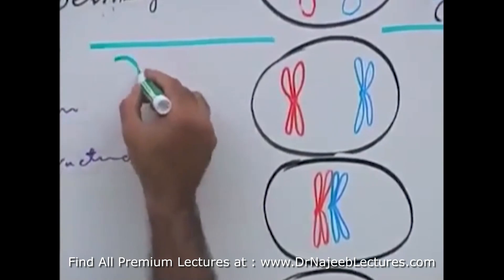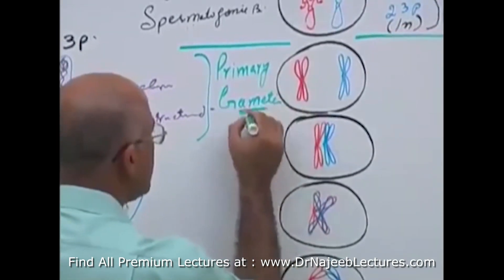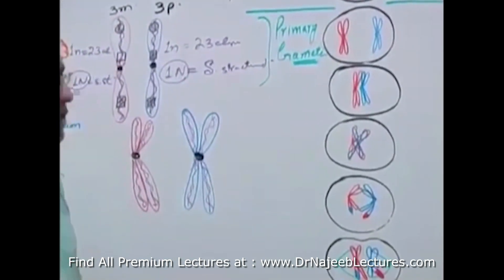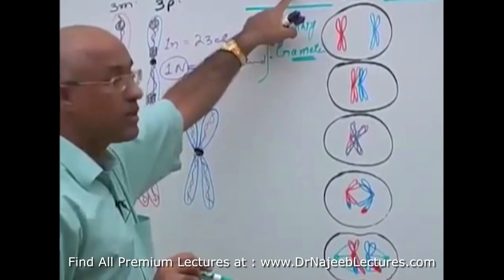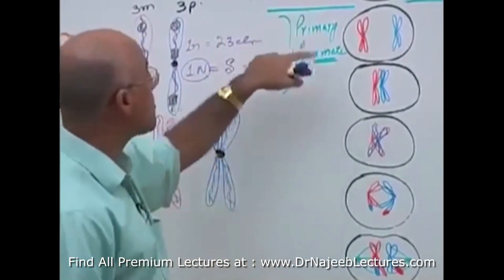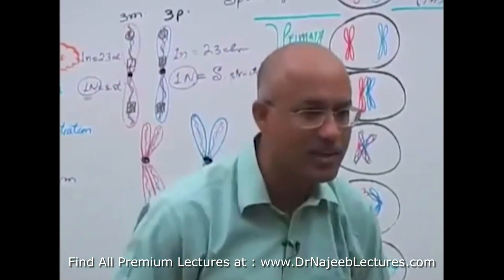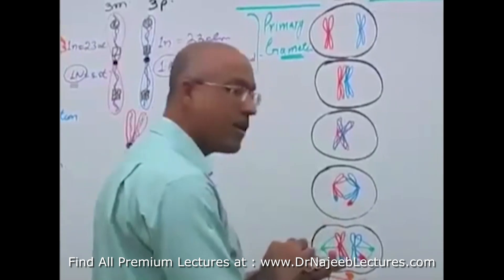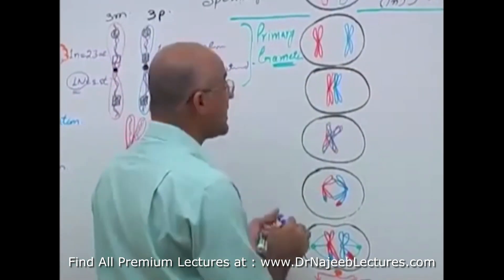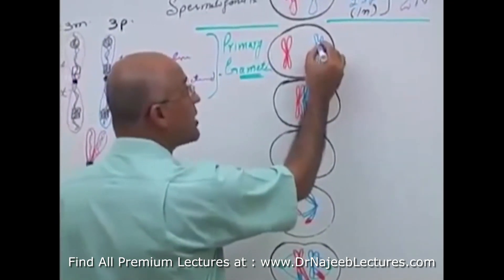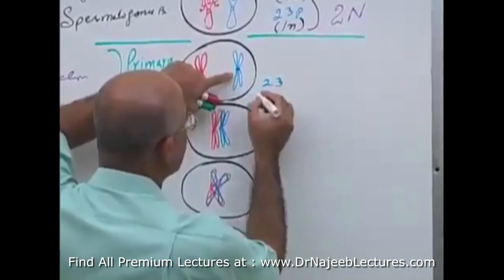This cell with double structured chromosomes is called the primary gamete — in females it is the primary oocyte, and since we are discussing the male, it is the primary spermatocyte. The primary spermatocyte is derived from spermatogonia B. In the primary spermatocyte, all chromosomes from maternal and paternal sides are double structured because they have already replicated their DNA. There are now 23 paternal chromosomes that are double structured.